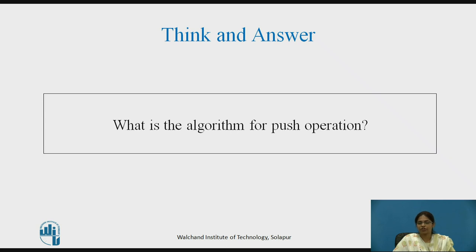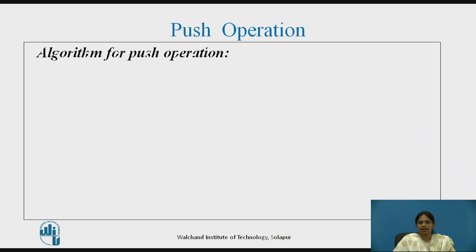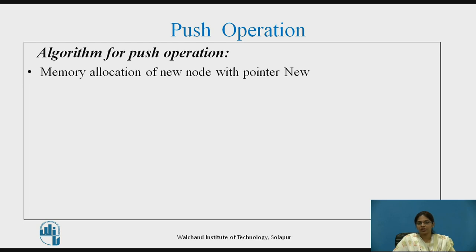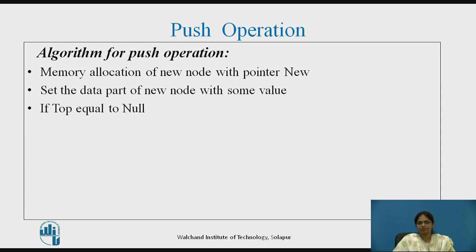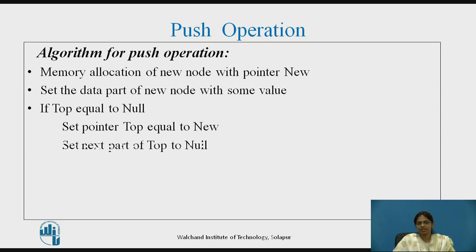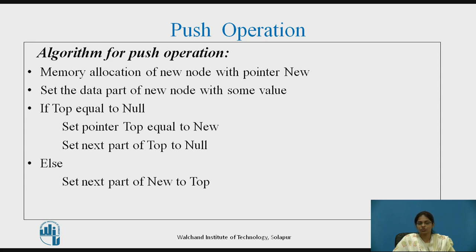Try to think of an answer: what is the algorithm for push operation? Pause the video and note down the answer. Algorithm for push operation: first, allocate memory for a new node with pointer new. Then set the data part of the new node with some value. Next, check whether top is pointing to null — this indicates whether the stack is empty. If the stack is empty, set the top pointer equal to the new node so this new node becomes the top, and set the next part of top to null. Else, if top is not null — stack is not empty — set the next part of new to top, and then set pointer top equal to the new node.